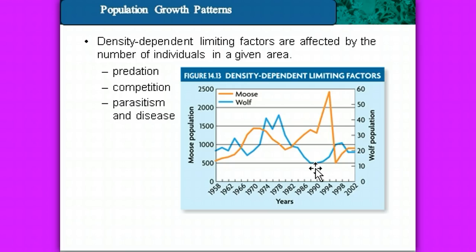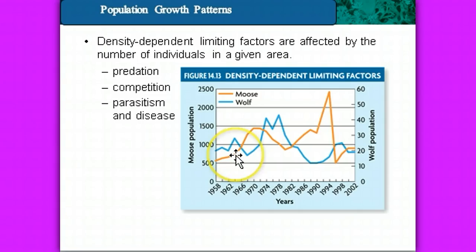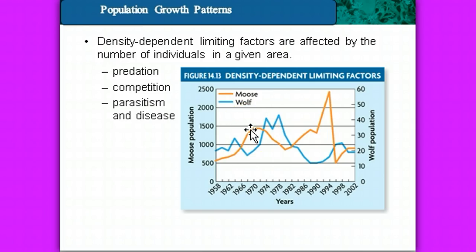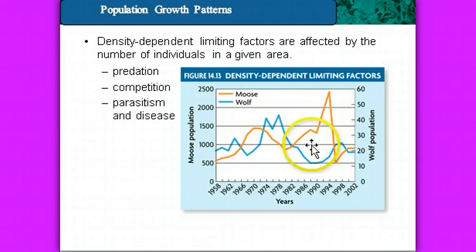Look at the correlation between the moose and wolf populations. When there are a lot of predators, the moose population tends to stay down. As soon as the wolves drop down, the number of moose pops up. Then wolf numbers increase because there's lots of food available, so the moose population goes down again. It's an interesting predator-prey cycle.